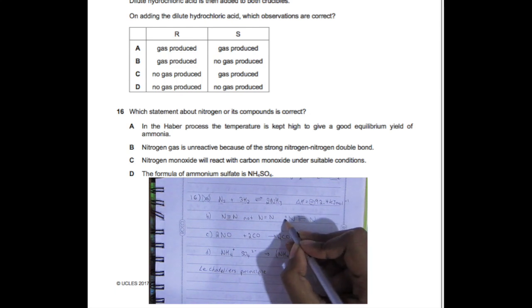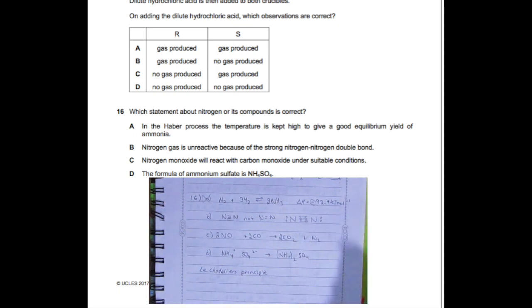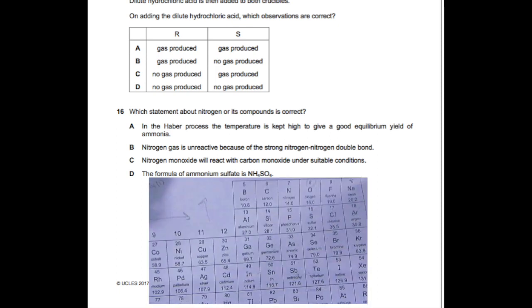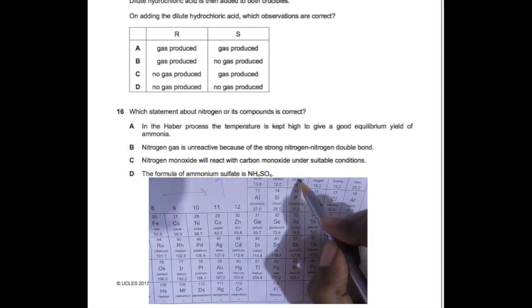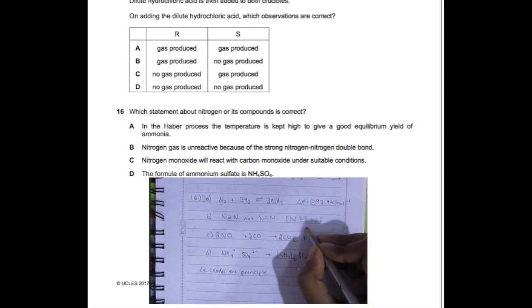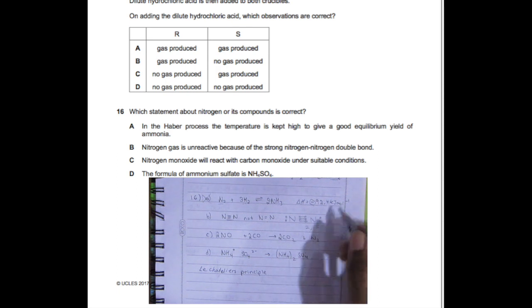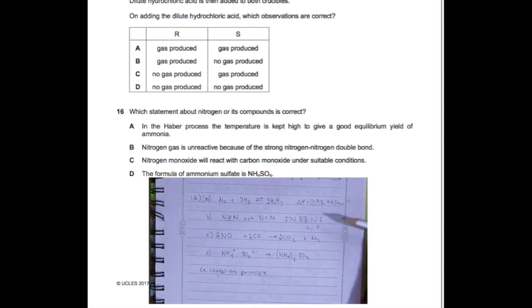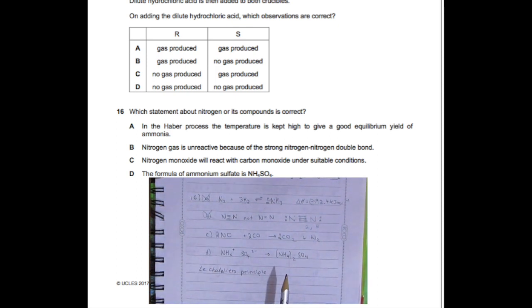If we decrease the temperature, it'll try to oppose that and move forward because the forward reaction releases energy—exothermic. Part A is out. B: Nitrogen gas has a triple bond, not a double bond. If you draw it out, it's supposed to look like that. For C, nitrogen monoxide will react with carbon monoxide under suitable conditions. That is true.